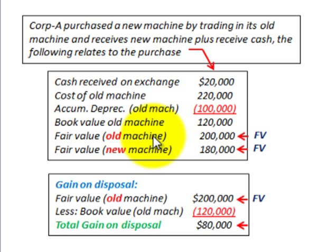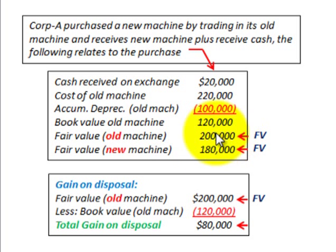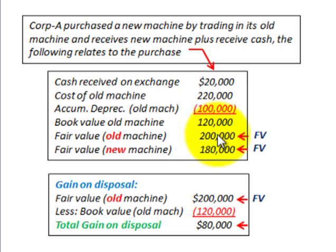Somehow we're going to be given in our example the fair value of the old machine and the fair value of the new machine. The fair value of the old machine is $200,000, and its book value is $120,000. You can see that fair value is greater than book value, so there's going to be a gain in this exchange.